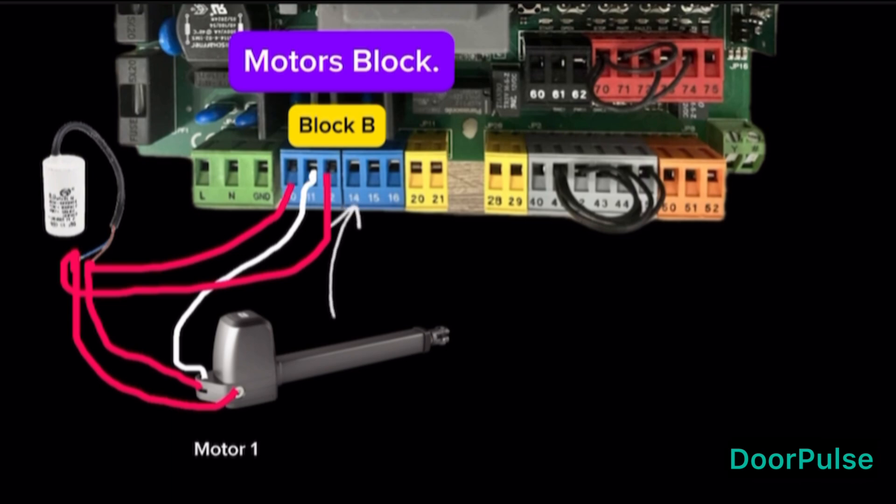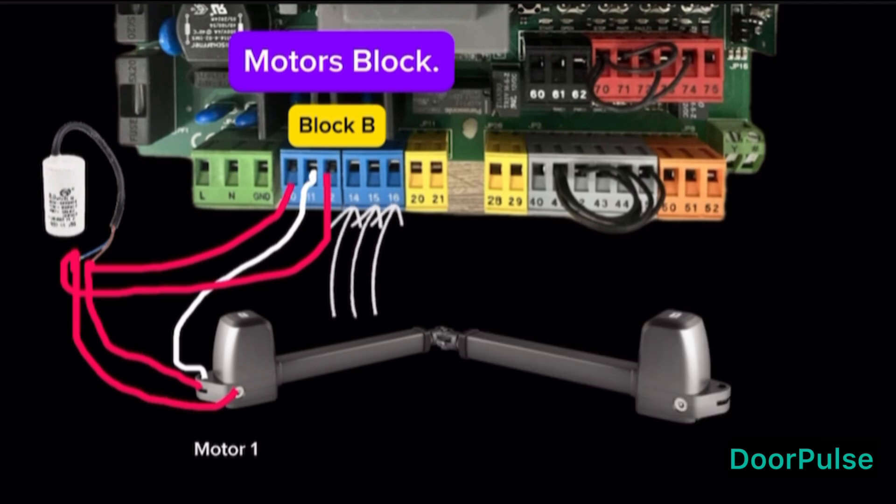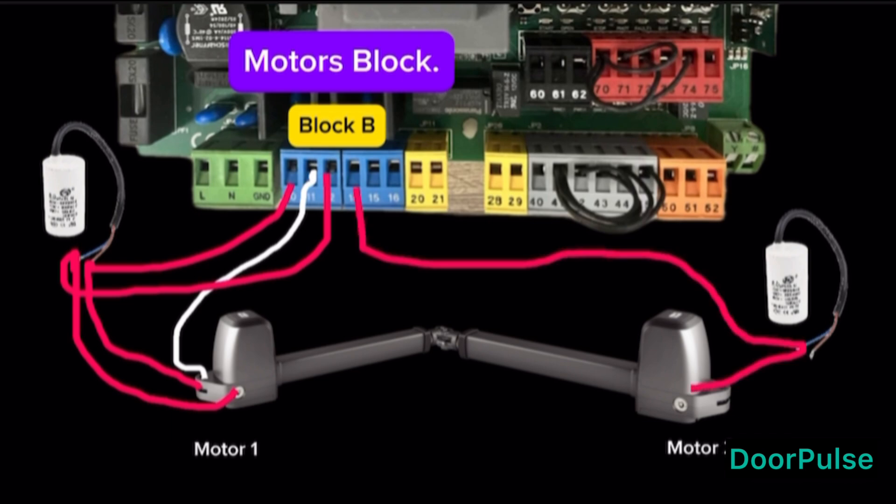Terminals 14, 15, and 16 is Motor 2. Terminal 14, connect Motor 2 phase wire with condenser. Terminal 15, connect Motor 2 common wire only. Terminal 16, connect Motor 2 phase wire with condenser.